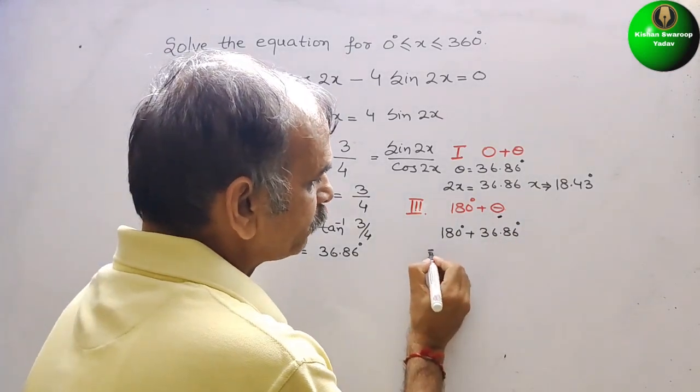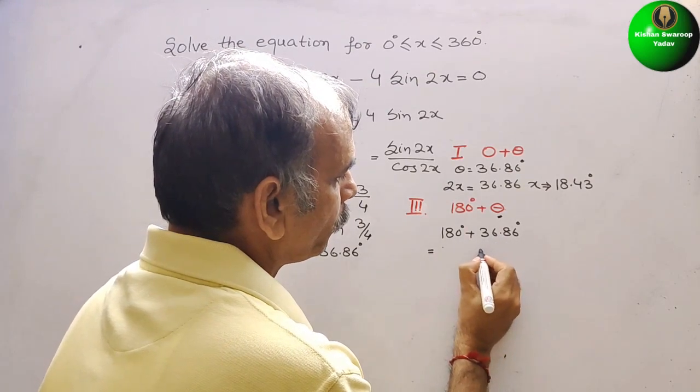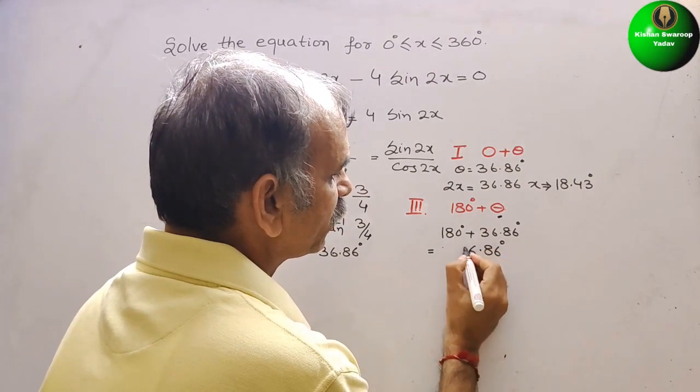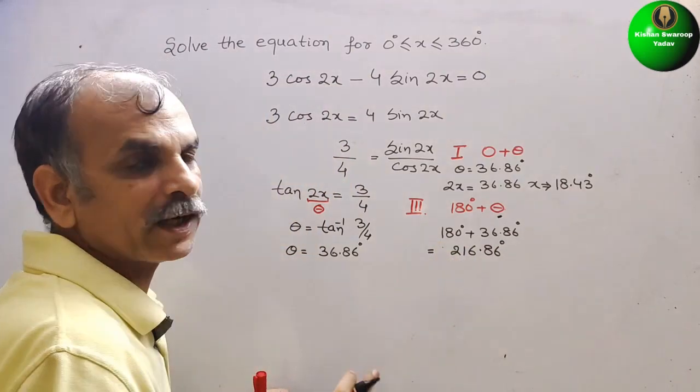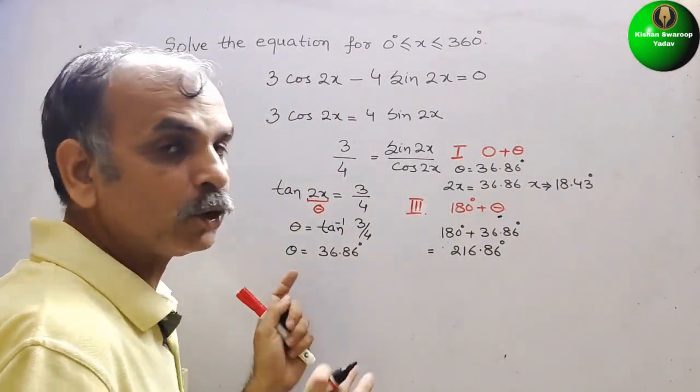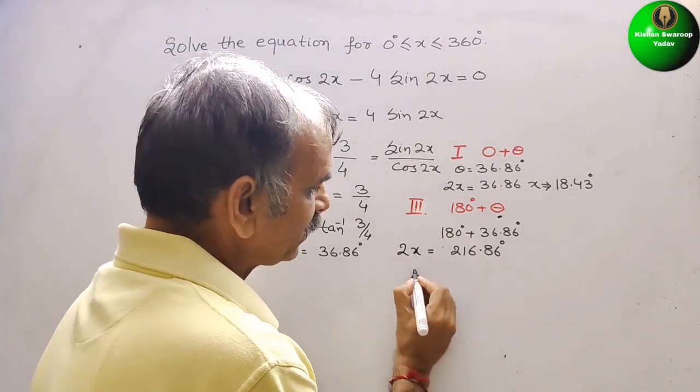So this is 216.86 degree. This is in the third quadrant. But we know that is nothing but 2x.